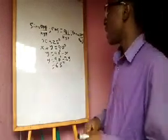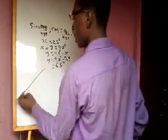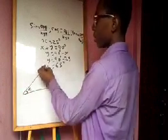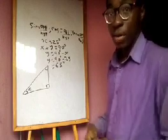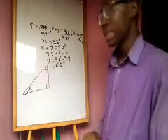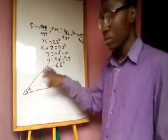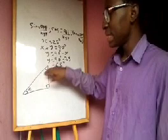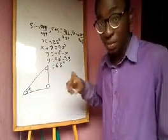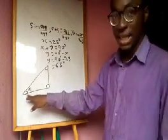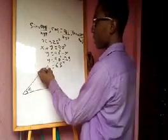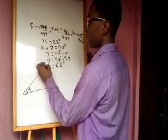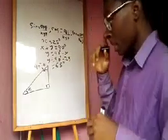Now let's draw a triangle. A triangle has three angles. Let's call one angle theta and the other the complementary angle of theta. Since the angles in a triangle sum to 180 degrees and one angle is 90 degrees, the remaining two angles sum to 90 degrees. So if one angle is theta, the other must be 90 minus theta — its complementary angle.